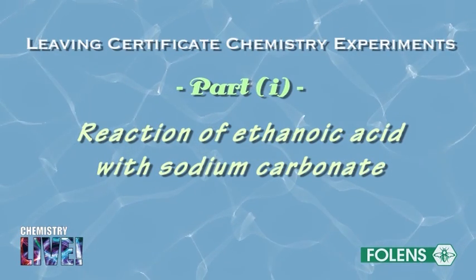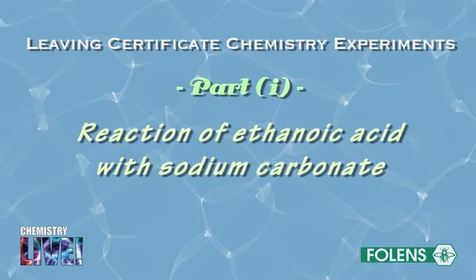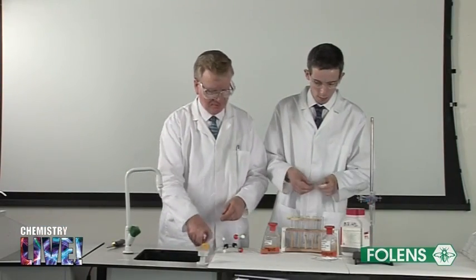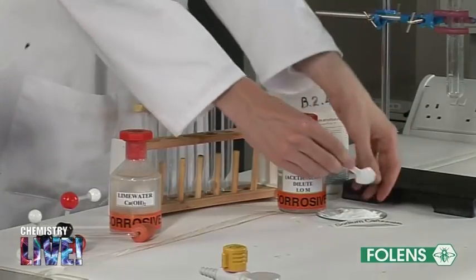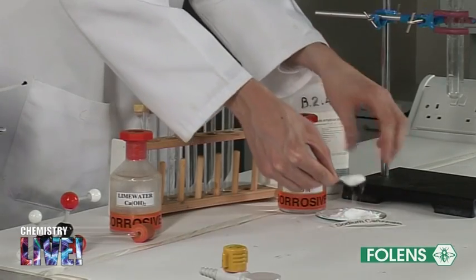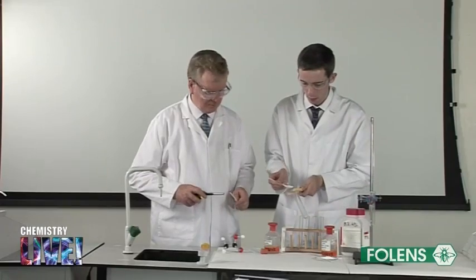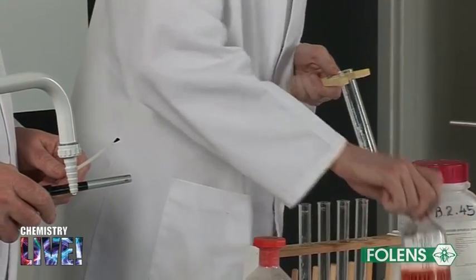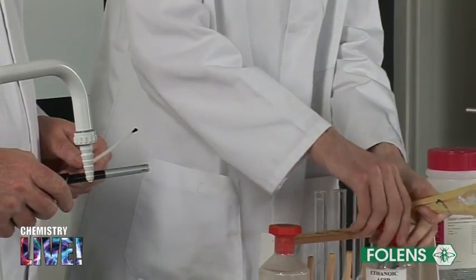We first investigate the reaction of ethanoic acid with sodium carbonate. Some sodium carbonate powder is placed in a test tube or in a boiling tube. Add about one quarter of a test tube of ethanoic acid solution to the sodium carbonate powder.